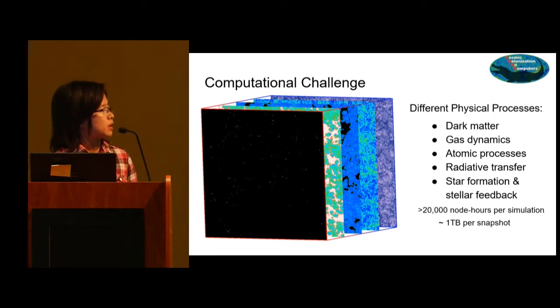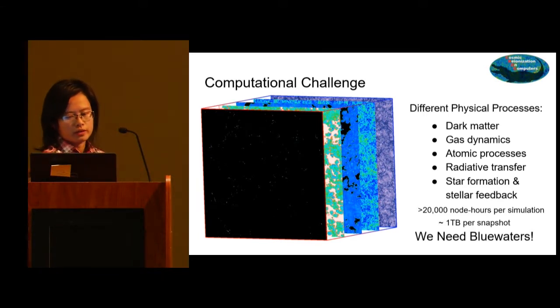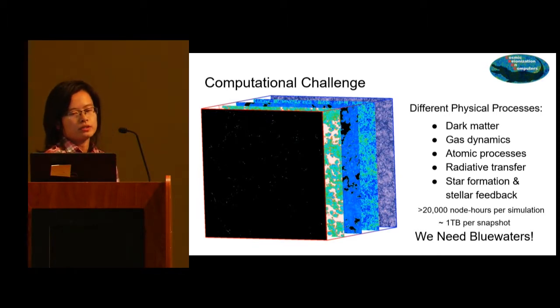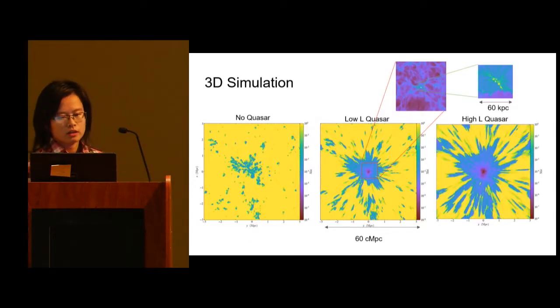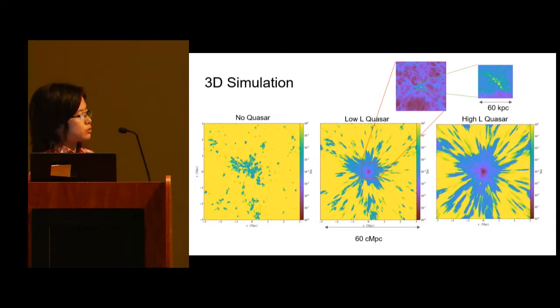One simulation costs more than 20,000 node hours. To save all the simulation data, we need one terabyte per snapshot. We desperately need Blue Waters, and thankfully we got the allocation. I was able to run a suite of simulations with different quasar parameters.